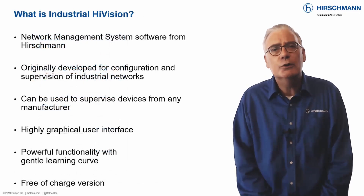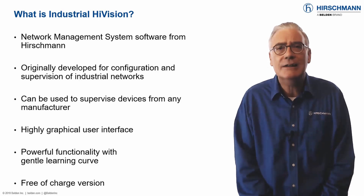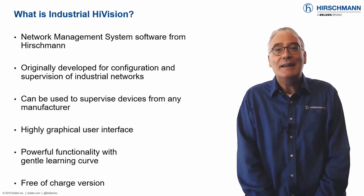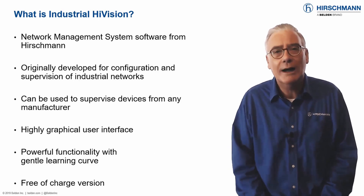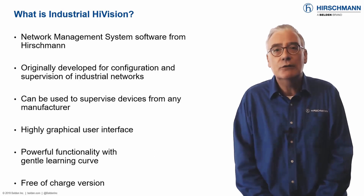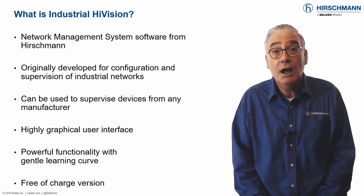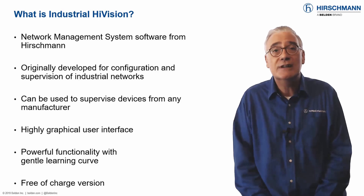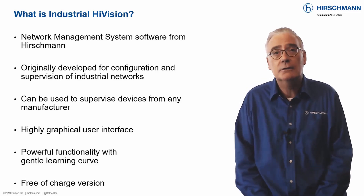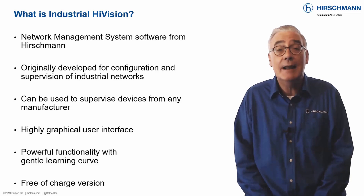If you search Google for free of charge network management tools, you will find many applications. Which means that if you are going to pay for an application, it will have to meet a lot of your requirements. Industrial HiVision was originally developed to configure and supervise industrial networks built using Hirschman equipment. Over the years it has been developed to support equipment from any manufacturer. Today it provides functionality which is usually only found on expensive office network applications.